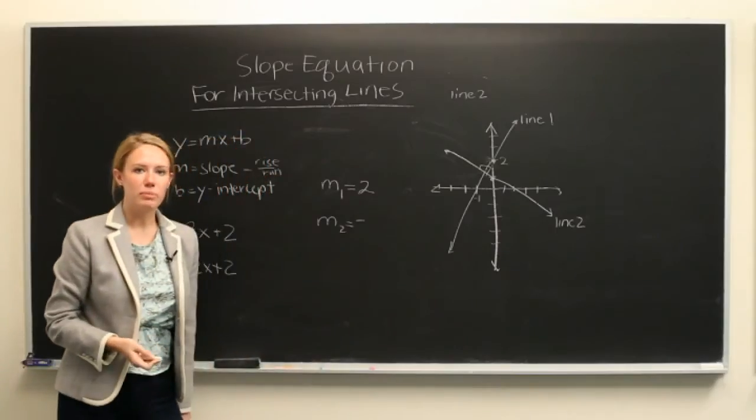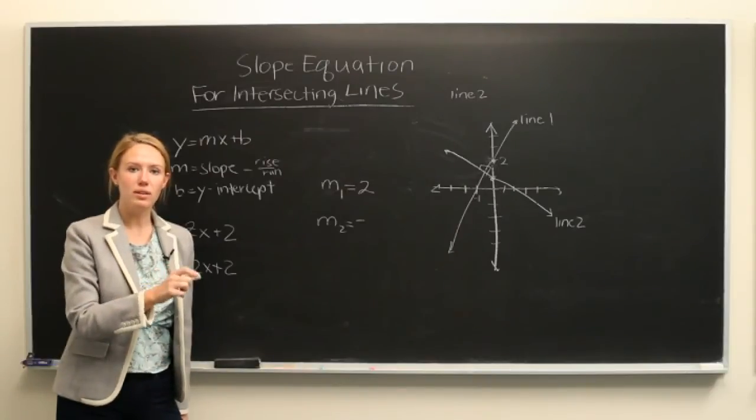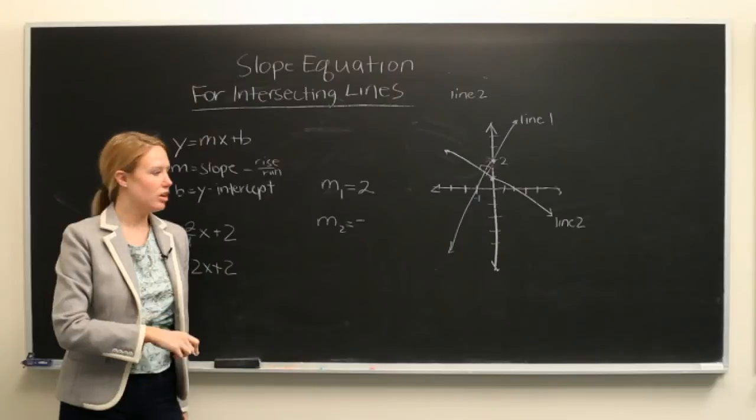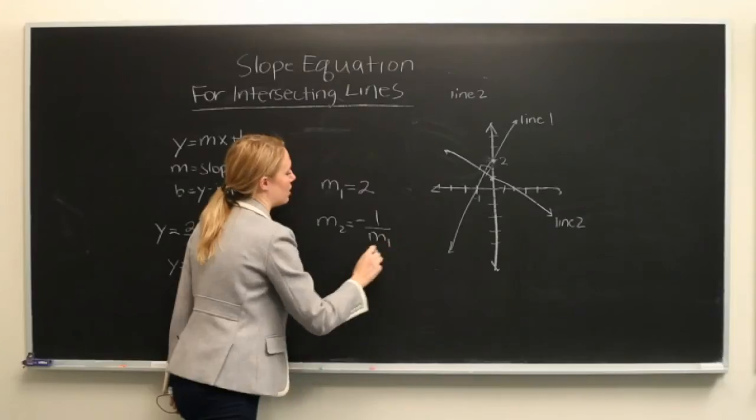and reciprocal means that we take the slope and take 1 divided by the slope. So we reciprocate it, 1 over m1.